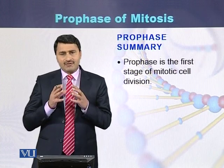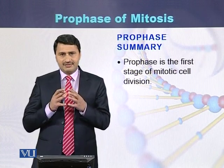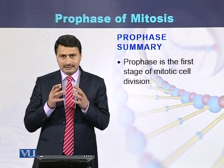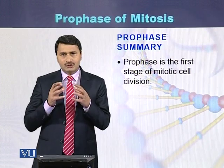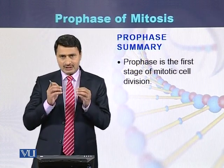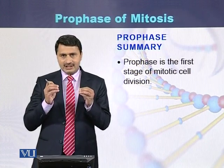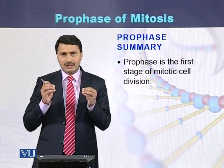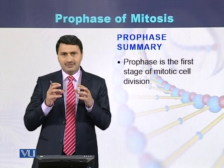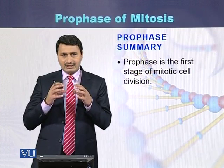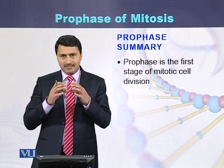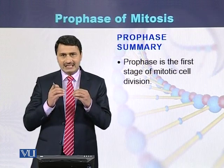Prophase is the first step of cell division where chromosomes condense, become thick and more visible, the nuclear membrane disappears, centrioles divide and take position on the poles of the cell, and spindle fibers radiate and spread within the cell.